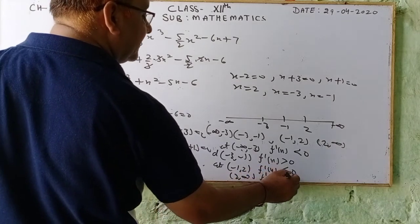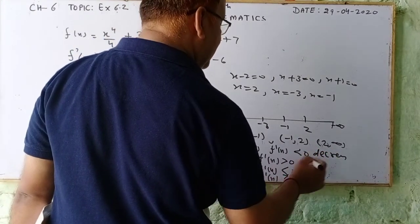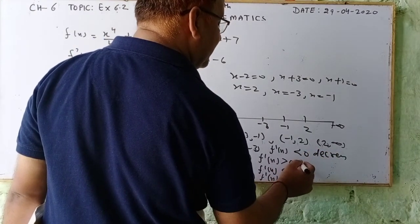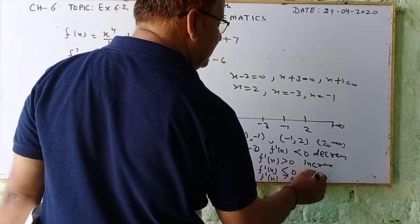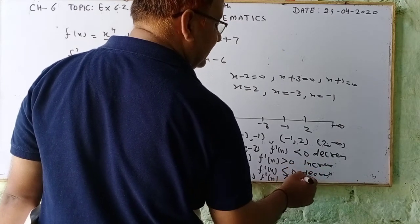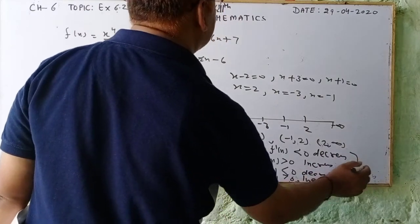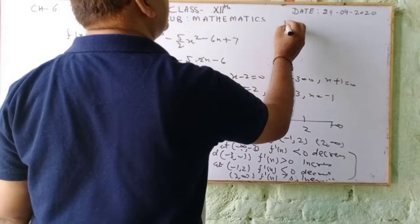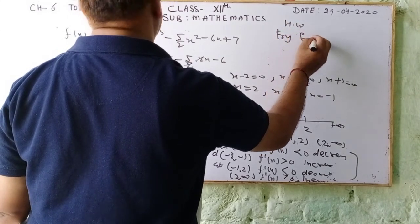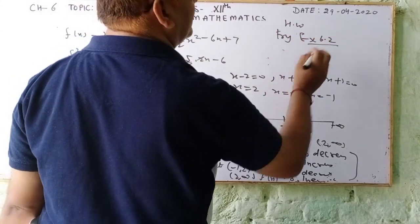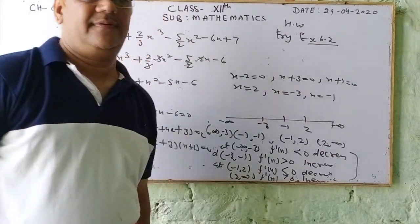So the function is: decreasing on (-∞, -3), increasing on (-3, -1), decreasing on (-1, 2), and increasing on (2, ∞). This is the required solution. As homework, students should try to complete Exercise 6.2 fully. If there is any problem, contact me. Thanks a lot!